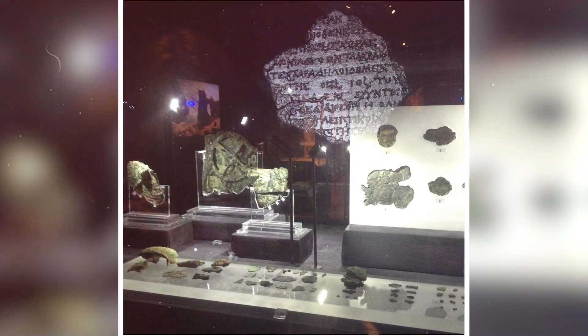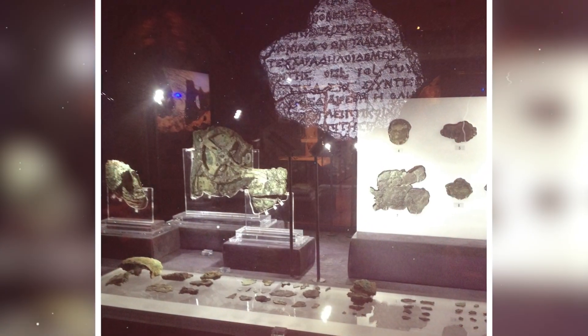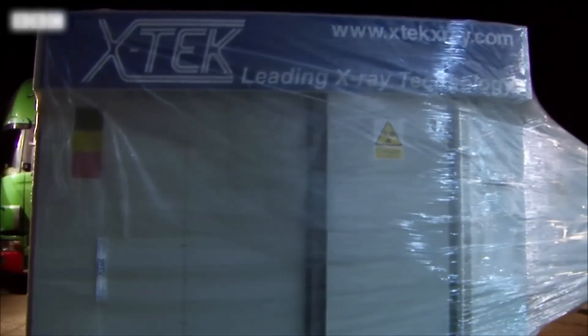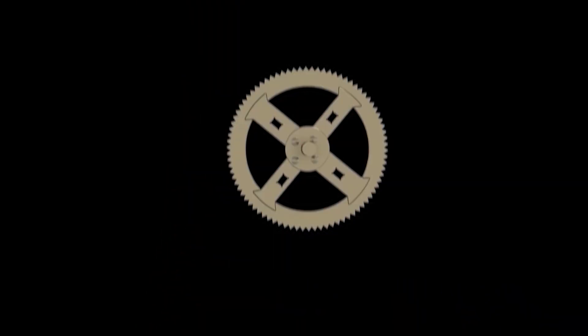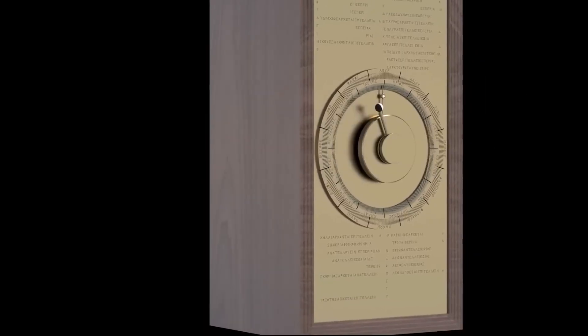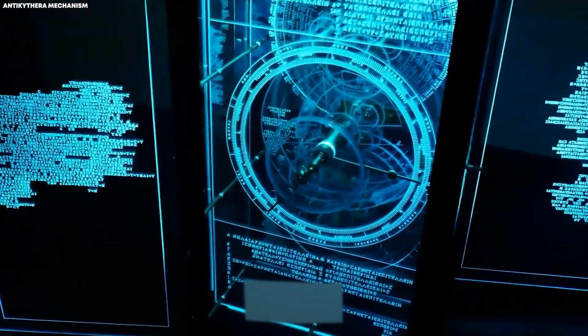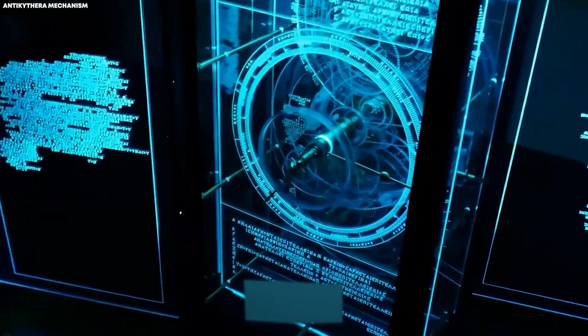Cracking the bronze code. For decades, no one knew. Then came the 1970s and the first X-ray scans. The results were astonishing: hidden within the corrosion lay a labyrinth of gears, tiny inscriptions, circular dials, and mysterious markings.